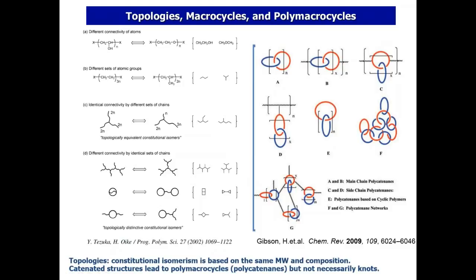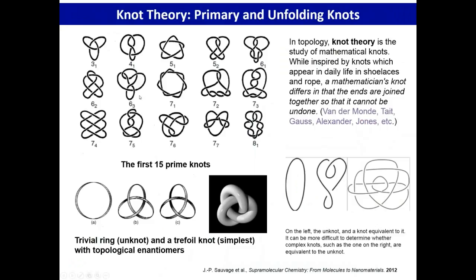Relating this to knot theory, which is a very important theory in mathematics, one is able to model this topology mathematically and quantify or identify them based on the number of crossovers and the number of chains involved in the structure. For example, a trefoil knot is a 3-1 structure — one chain with three crossovers — or a 6-2 designation, meaning two rings with six crossovers.